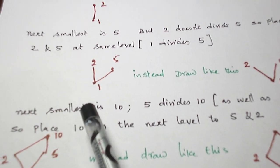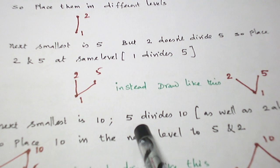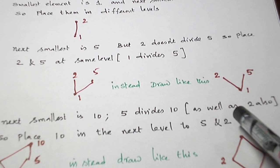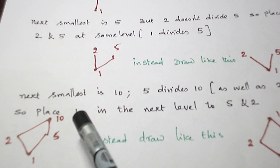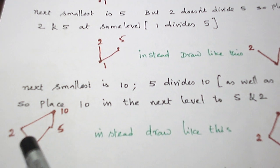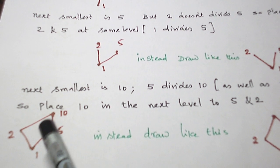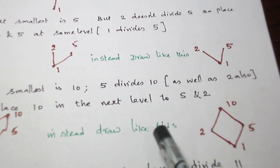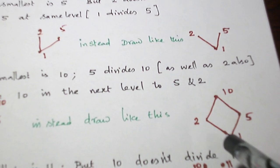And the next smallest element is 10. 5 divides 10 and 2 also divides 10, so 10 has to be placed in the next level like this. Now, 2 divides 10, 5 divides 10. Instead of drawing it one way, I am going to draw like a diamond shape that looks nice.